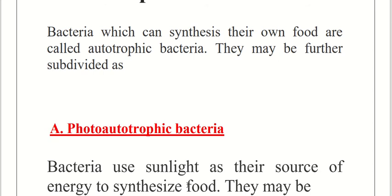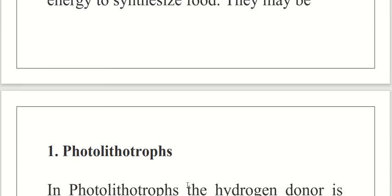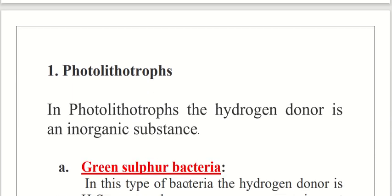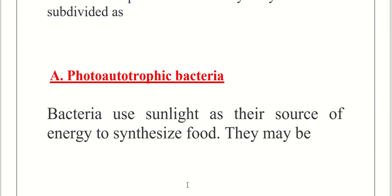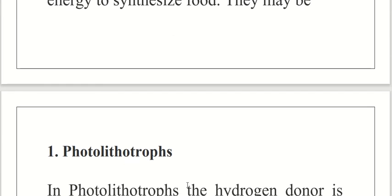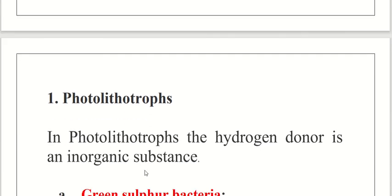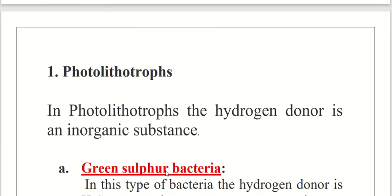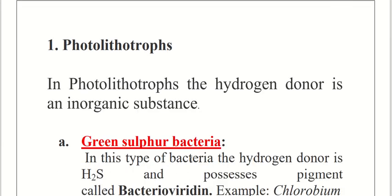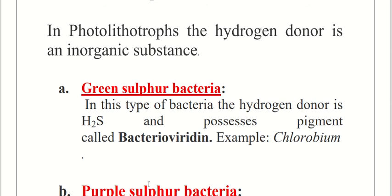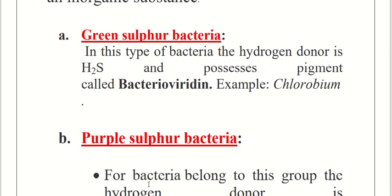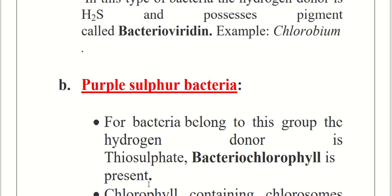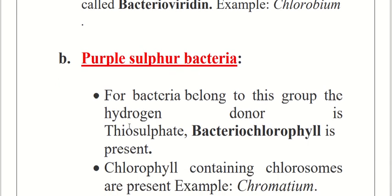Photo-autotrophic bacteria are further divided into photolithotrophs and photo-organotrophs. Photolithotrophs use inorganic substances as hydrogen donors. They contain bacteriochlorophyll. An example is Chlorobium. Purple sulfur bacteria also belong to this group.